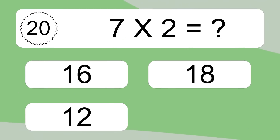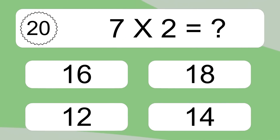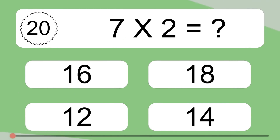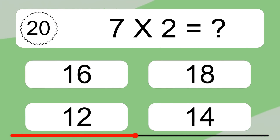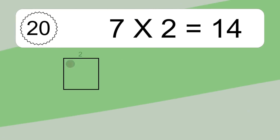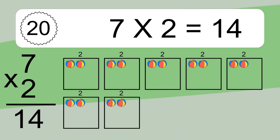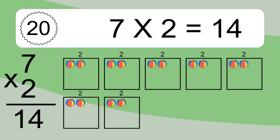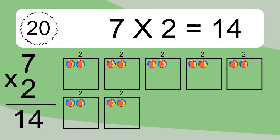7 times 2 equals what? This equals 14 balls. We have 7 boxes and each box has 2 colorful balls inside. If you count all the balls in all the boxes together, you will have 7 times 2 balls. This equals 14 balls.